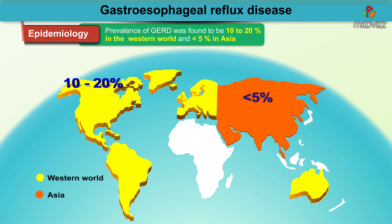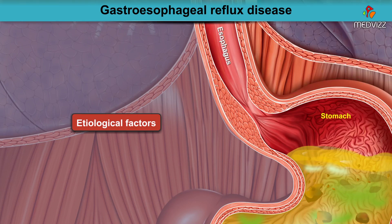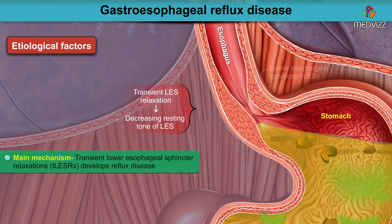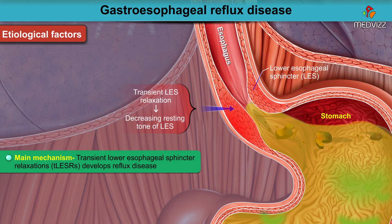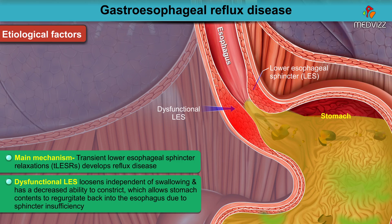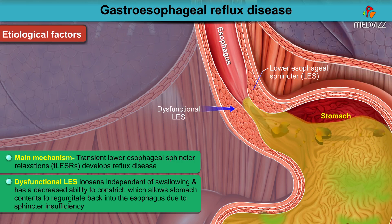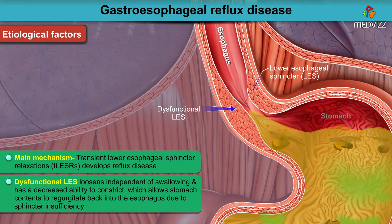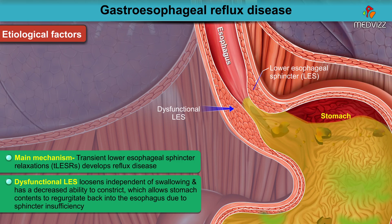Transient lower esophageal sphincter relaxations is the main mechanism behind the development of reflux disease. The dysfunctional LES loosens independent of swallowing and has a decreased ability to constrict, which allows stomach contents to regurgitate back into the esophagus due to sphincter insufficiency.